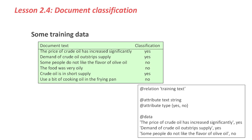Let's look at some documents. Here are six documents — very short documents. We'll look at a much larger example in a minute. Just a single sentence each, and they're classified into Yes and No classes. When you read these, they're all about oil. The Yes documents are about oil coming from the ground, and the No documents are about oil as used in cooking — the food is very oily, for example.